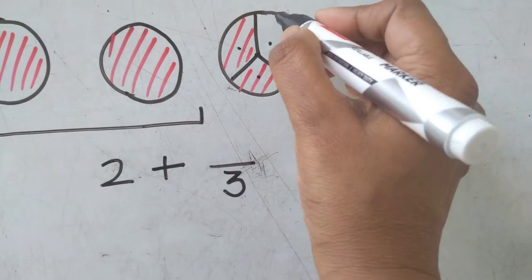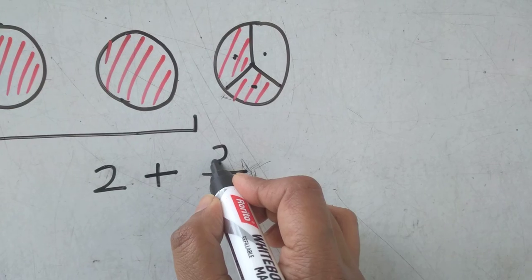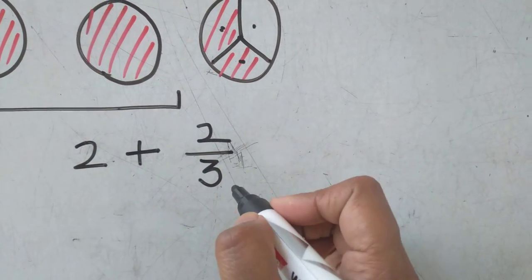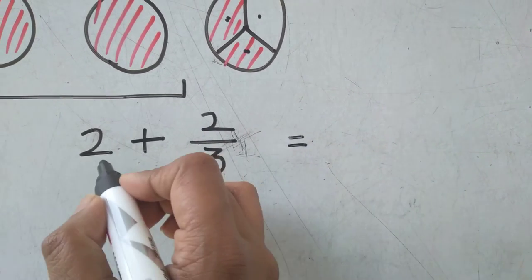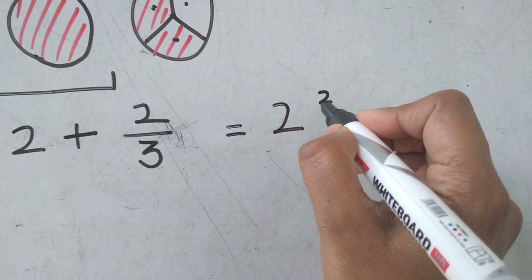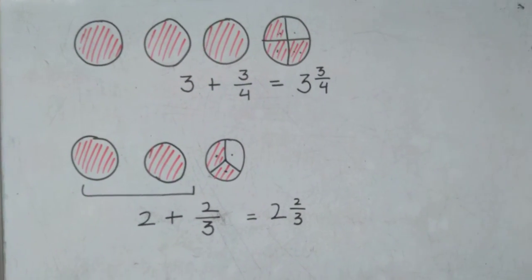Out of three, two are shaded, so two will be written in the numerator. Two plus two-thirds can be written as two whole, two by three. Thank you.